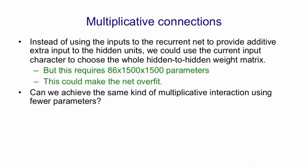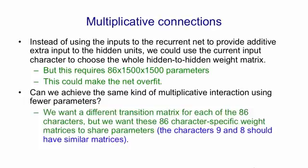So the question is, can we achieve this kind of multiplicative interaction, where the character determines the hidden to hidden weight matrix using many fewer parameters, by making use of the fact that characters have things in common. For example, all of the digits are all quite similar to each other in the way in which they make the hidden state evolve. So we want to have a different transition matrix for each of those 86 characters, but we want those 86 character-specific weight matrices to share parameters. And that's a reasonable thing to do because we know that characters 8 and 9 should have very similar transition matrices.